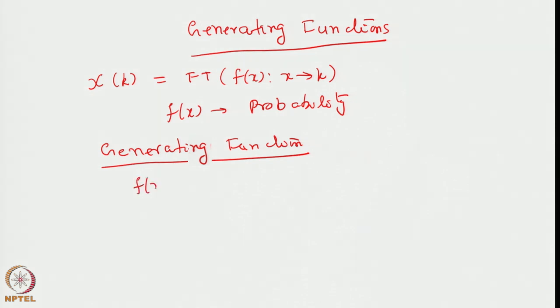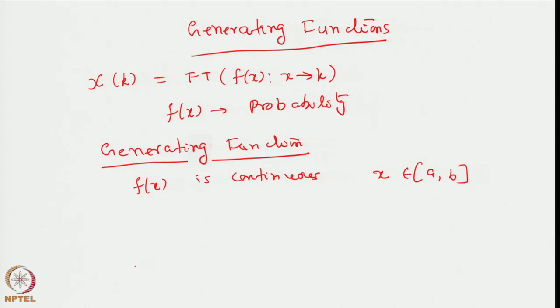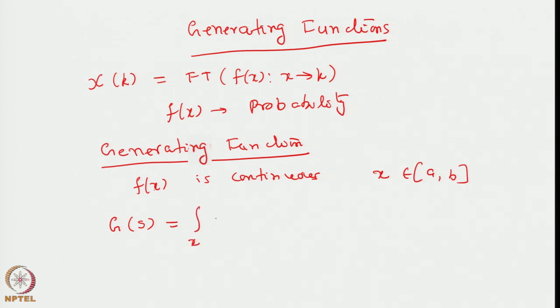We define a generating function applicable to a continuous distribution and separately for discrete distributions. If my function f(x) is continuous and is defined over some space x in [a, b] — if it is the entire real line, then it can be minus infinity to infinity; if it is valid only for positive values, then it will be 0 to infinity. Regardless of how it is defined, one can define a generating function g of a parameter s: one defines a conjugate parameter s via an exponential function multiplied by f(x) and integrated over all x. That is how we define the generating function.